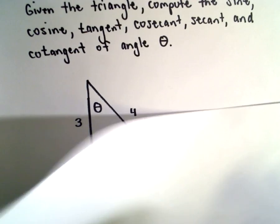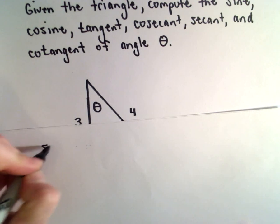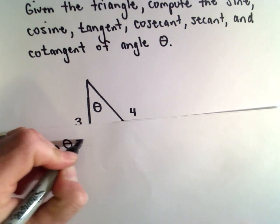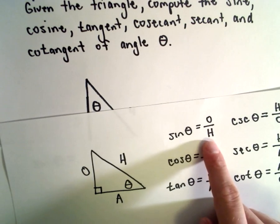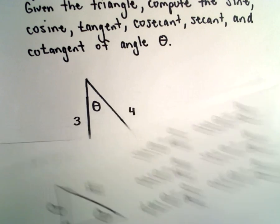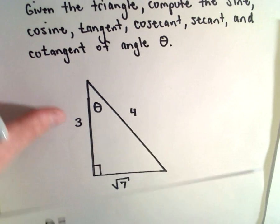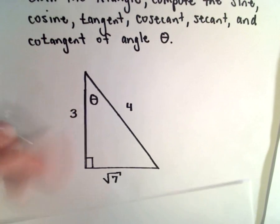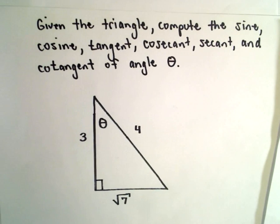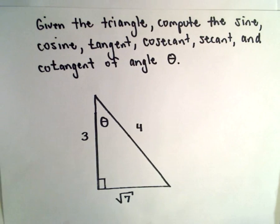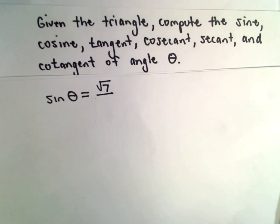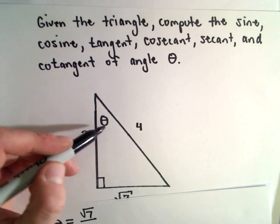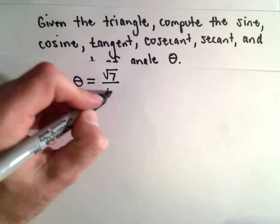And maybe you have to rationalize a denominator at some point. So sine of theta, that's the opposite side divided by the hypotenuse. The length of the opposite side, well in this case the opposite side is the side furthest away from our angle theta. The opposite side is going to be the square root of 7, and then we divide that by the length of the hypotenuse, which in this case will be positive 4.